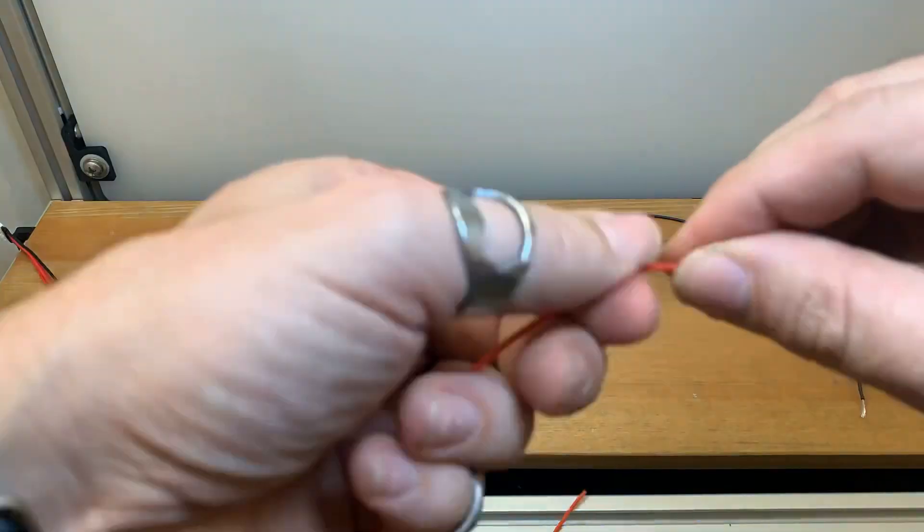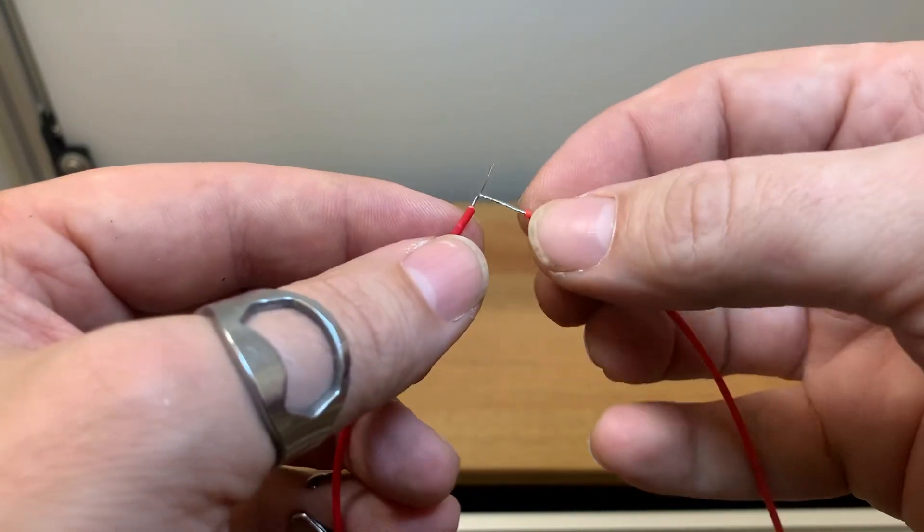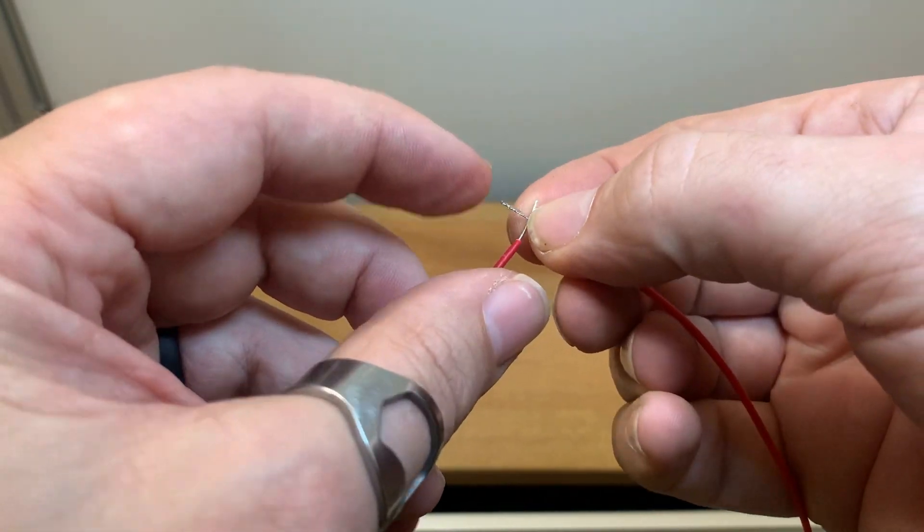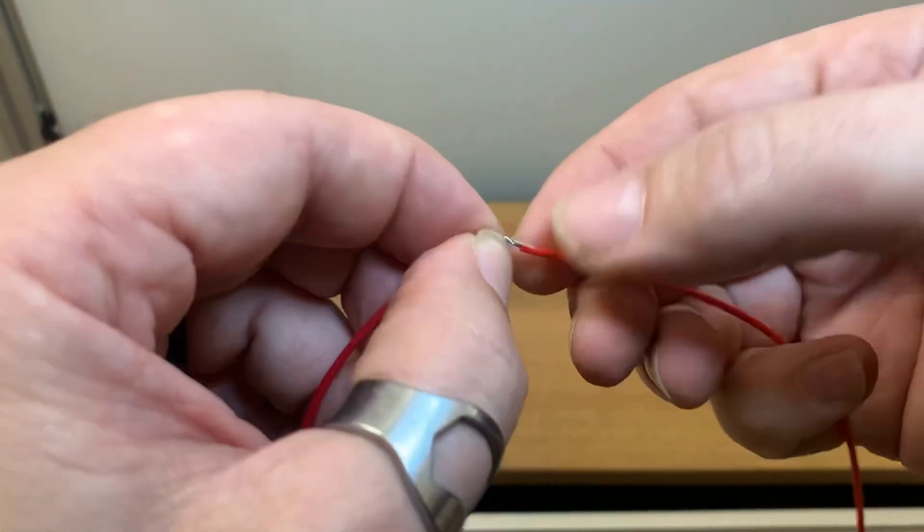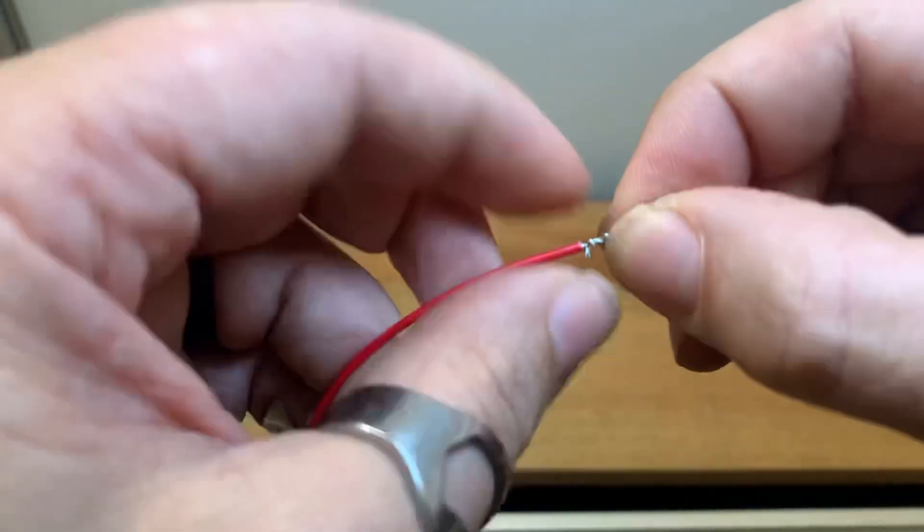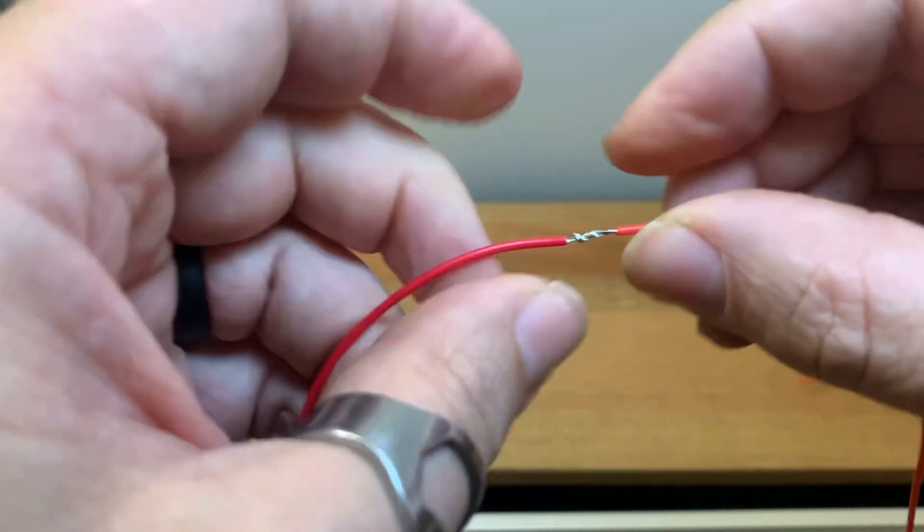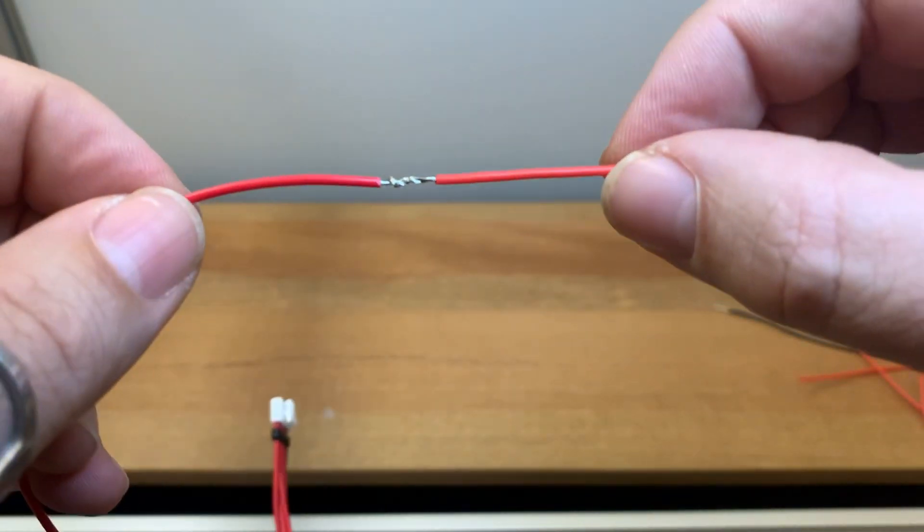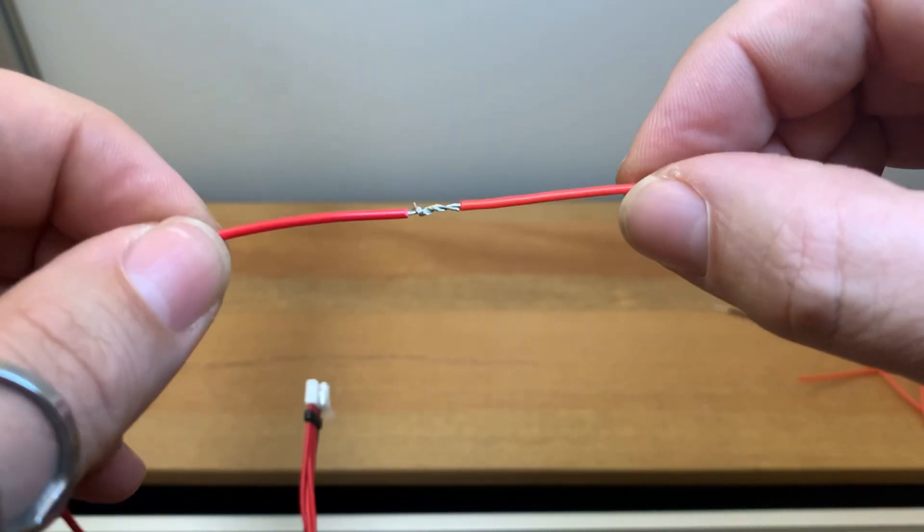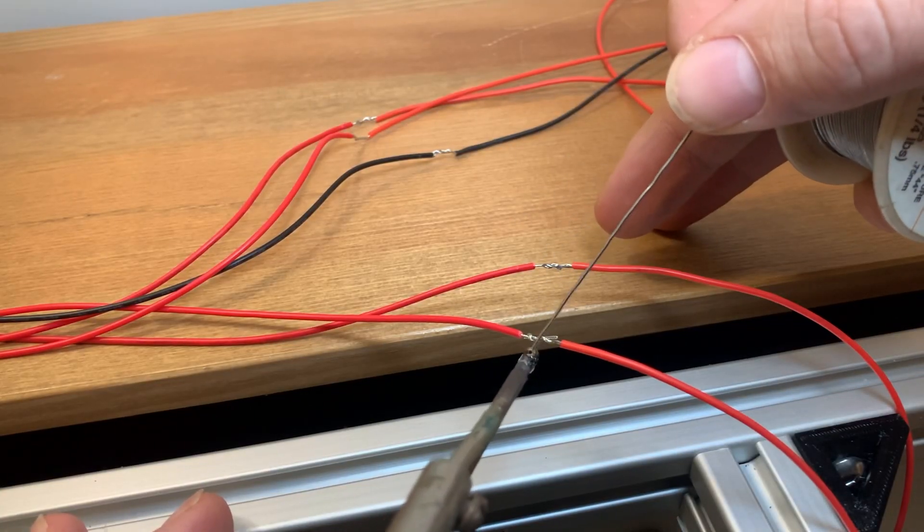After twisting the individual strands together, I can twist the two wires together. Okay that was a little quick, let me show you again. I find this method works well. I cross the two wires at about the midpoint and then wrap the tail of each wire around the other wire. By pulling the connection slightly apart it lines up with the edge of the insulation and I can make sure to get that piece when I solder the wires together.